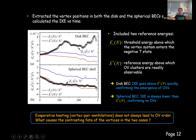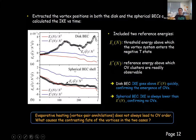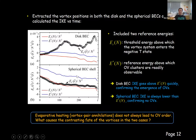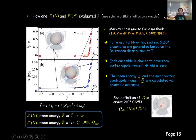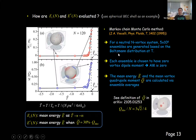This raises a question: vortex pair annihilations, essentially the evaporative heating mechanism, occurred in both cases. But we see Onsager vortices in one case and not in the other. This slide discusses how the two reference energies are calculated, but to save time I'm going to skip it. The two reference energies are calculated using the Markov chain Monte Carlo method, which is a well-established method for this purpose.